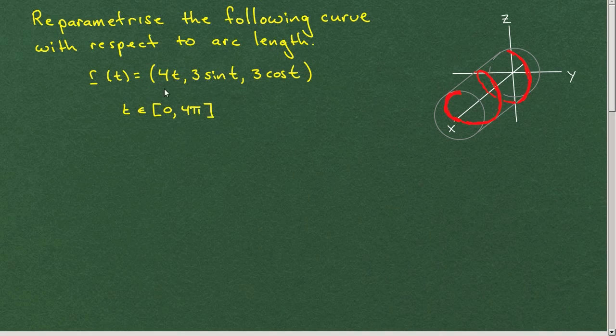Reparameterize the following curve with respect to arc length. And you're given a parameterization, R of t, here. And you're told t is in the interval 0 to 4π.